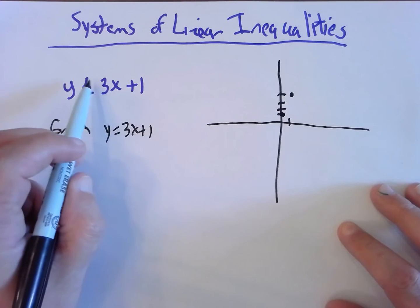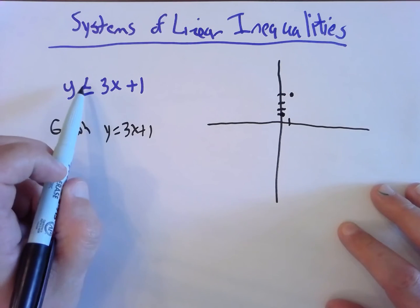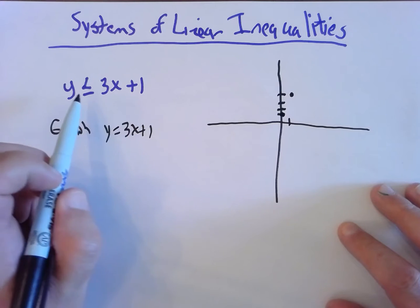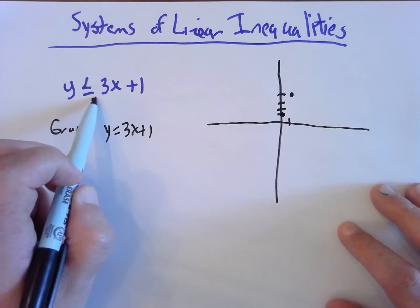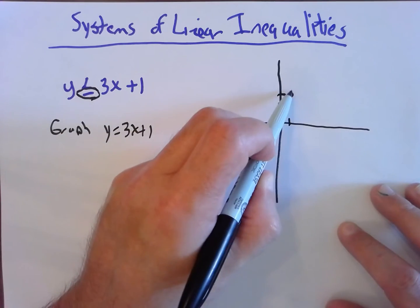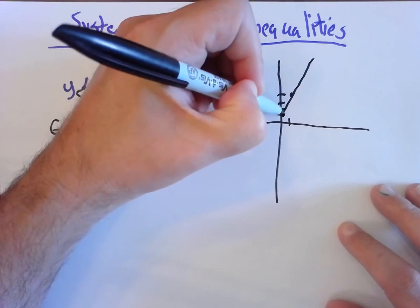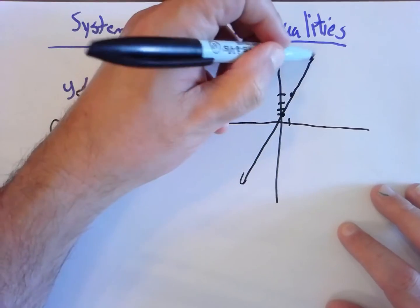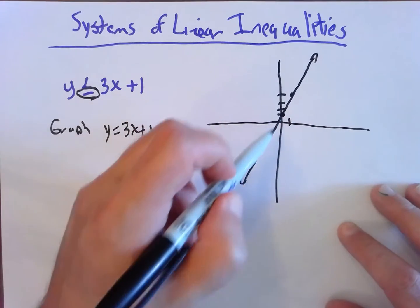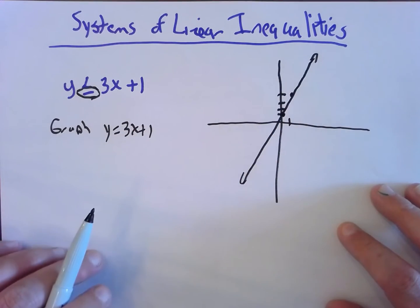I want to eventually graph y less than or equal to 3x plus 1. Because of the equal sign here, I want this line to be a solid line. If I didn't have the equal to there, I would make this a dashed line. We'll do an example like that in a minute.